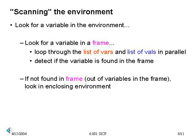Once we have an implementation of environments, we need to use them. In particular, environments are there to help us look up values of variables. When we want to look up a variable in an environment, we first look for it in a frame — we take the current frame and loop through the list of variables and the list of values in parallel, walking down them in synchrony. If we find the variable we're looking for, we return the associated value. If we get all the way through without finding it, we move on to the next enclosing environment.